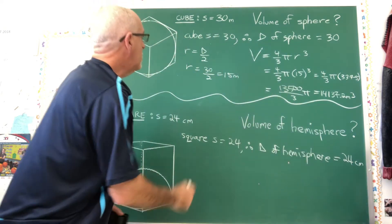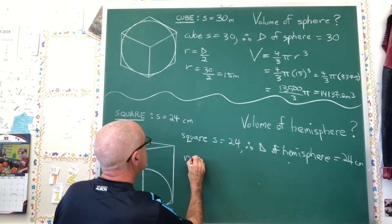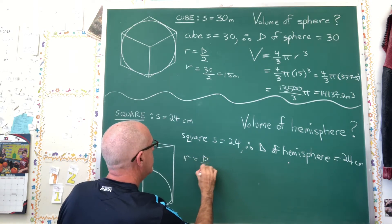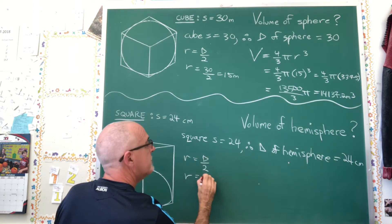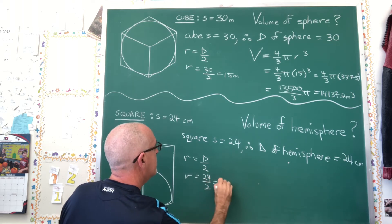Now we're doing the same process. The radius is equal to diameter over 2, so the radius of this hemisphere is 24 over 2, which is 12 centimeters.